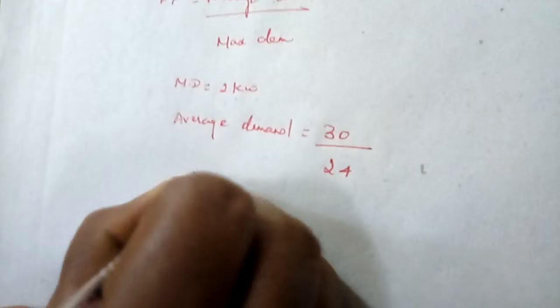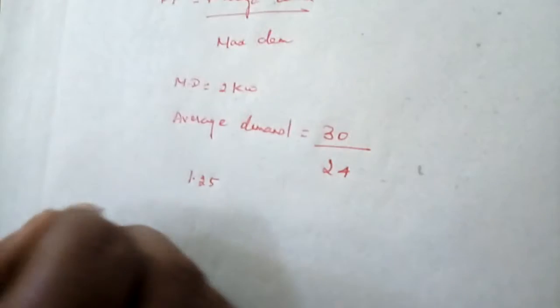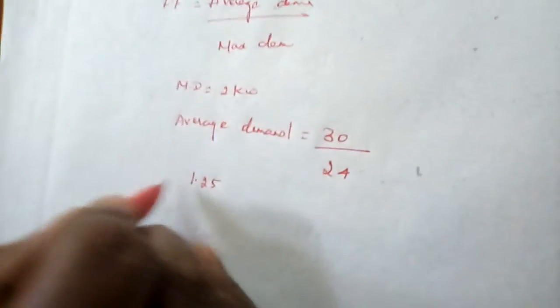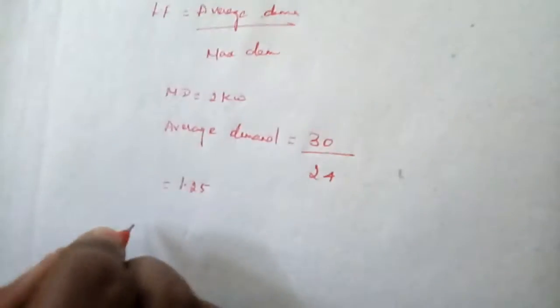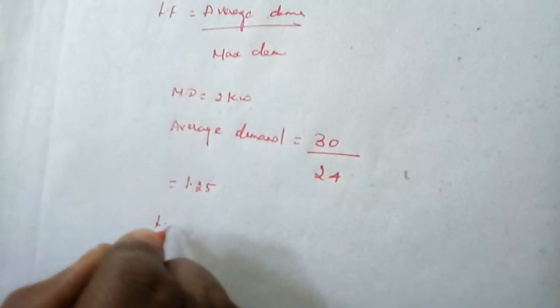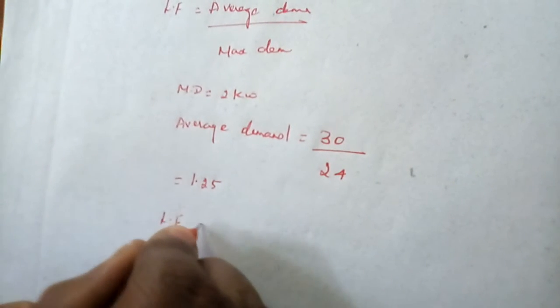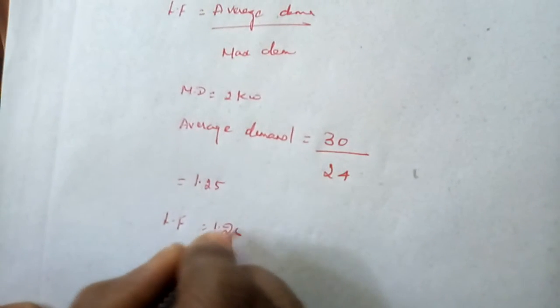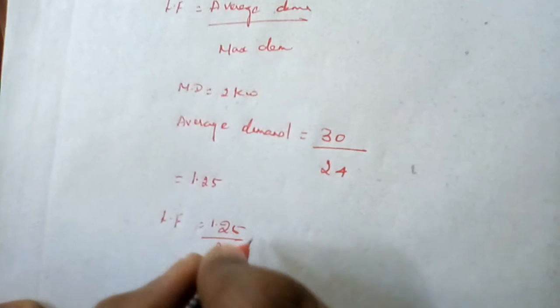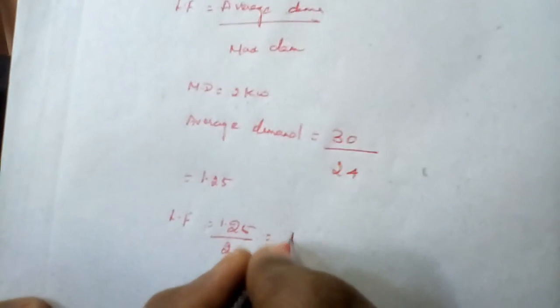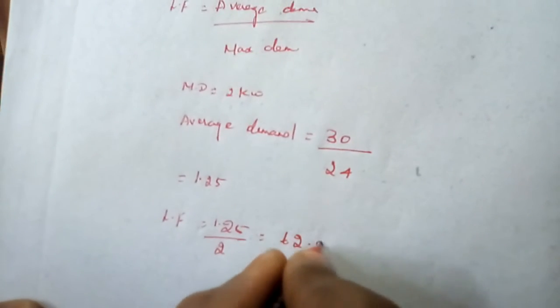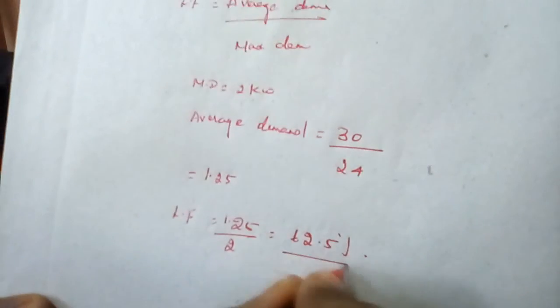Our maximum demand is 2 kilowatt. So the load factor equals 1.25 divided by 2, which equals 62.5 percent. Option C is the correct answer for question number two.